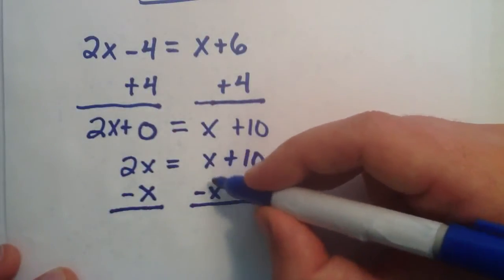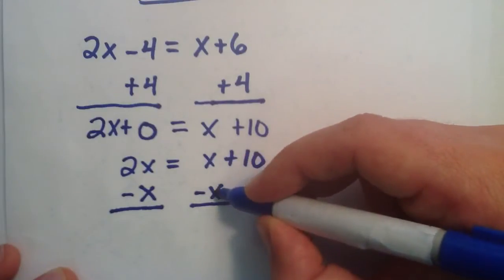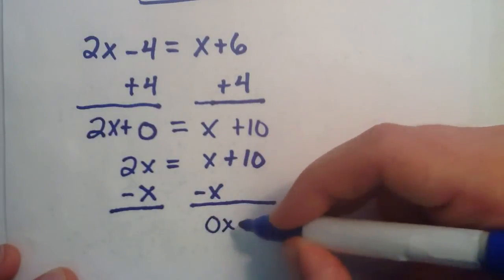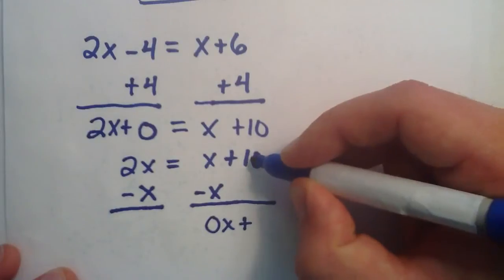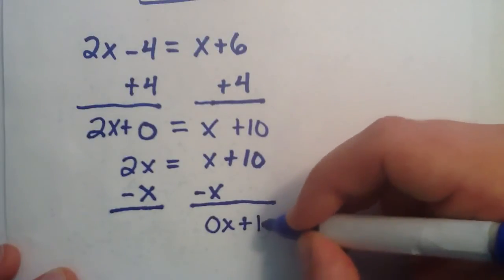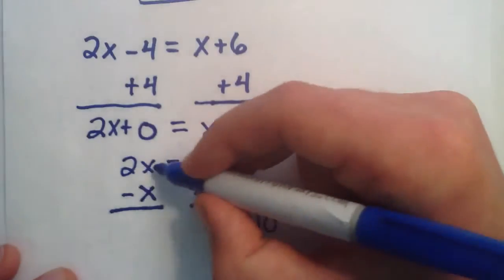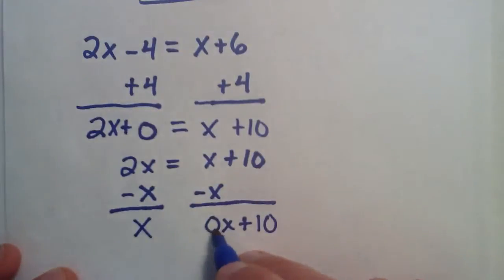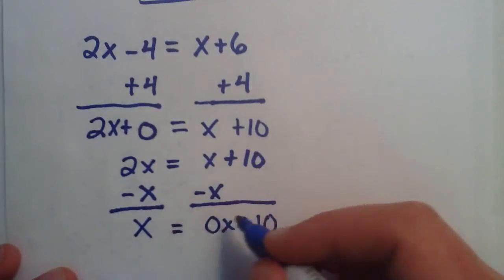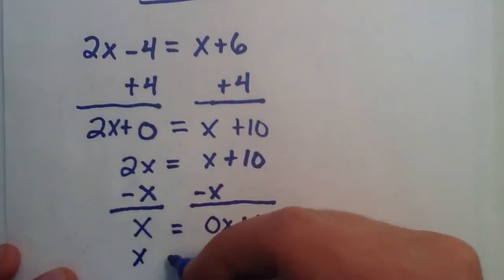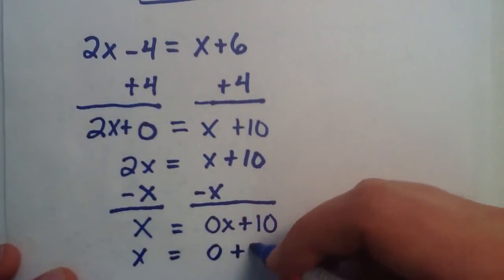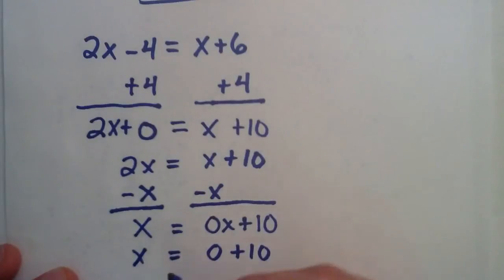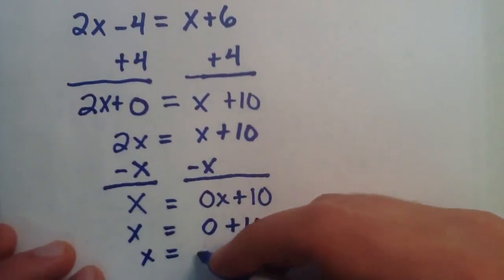So, we're taking away 1x. 1x minus an x gives us 0x's. And we didn't add or take away any numbers. So, this is simply 10. And 2x's take away 1x gives us an x. And 0 times anything equals 0. So, this is simply x equals 0 plus 10. Or simply x equals 10.